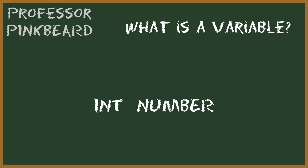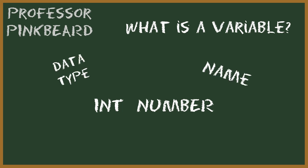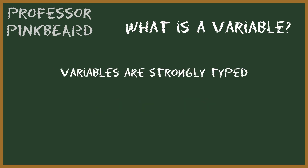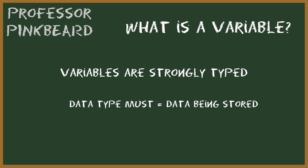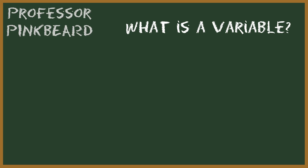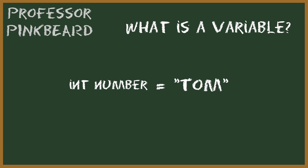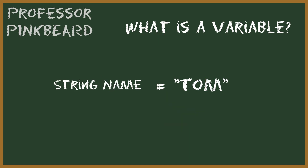Each variable in C# has a name and a data type. And because C# is what is known as strongly typed, each data type of a variable must match the type of data that you are storing in it. So for example, if you have a variable that is supposed to hold a number, you cannot make that variable hold a name because it is an incompatible type. In order to store that name, you would need a string of characters type of variable.